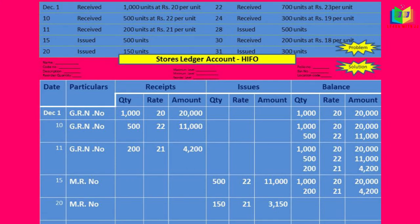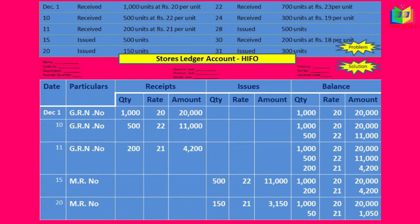Next, on the 20th we also have an issue of 150 units. We check the balance column — 20 and 21 are there. We take the next highest, which is 21. We issue only 150 units: 150 into 21 equals 3,150. But 50 units remain — among the 200 units at rupees 21, we issued only 150, so 50 units are left over at the rate of 21.